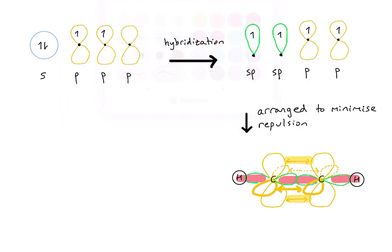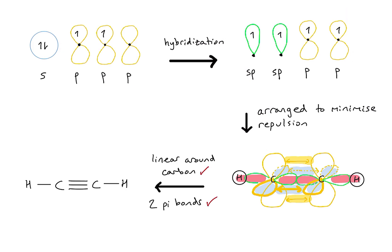Additionally, the other p orbitals — drawn in a horizontal plane, highlighted in blue for clarity — overlap either side of the bond axis to form a second pi bond. This suggested process of hybridization has allowed us to explain the structure of ethyne that we observe: a nice linear geometry around each carbon, and two pi bonds formed from the overlapping p orbitals.